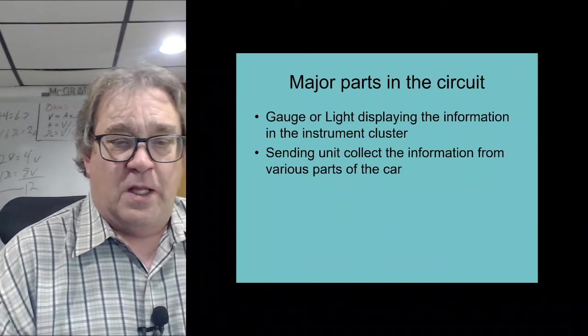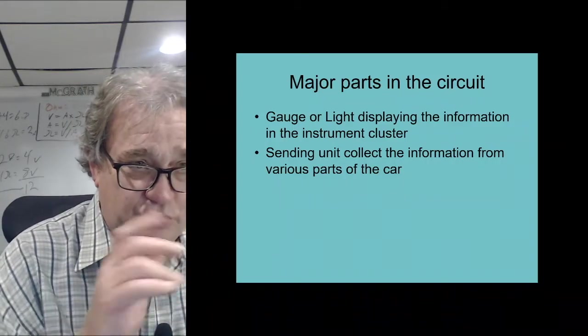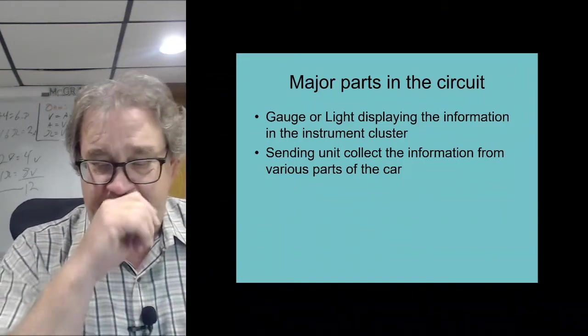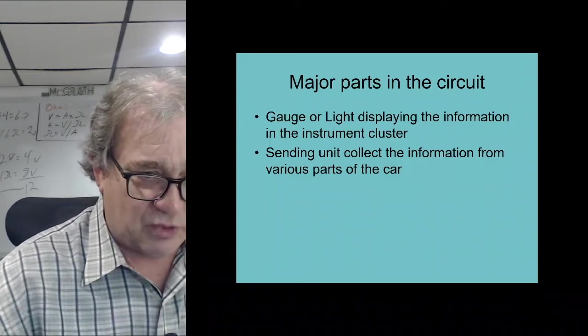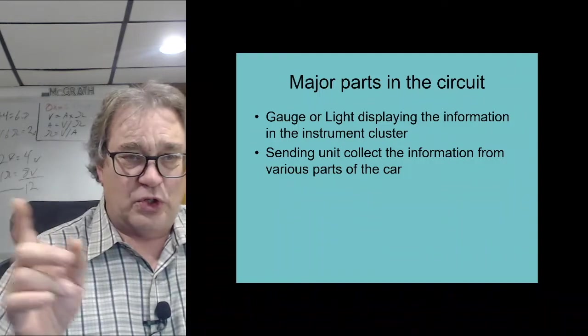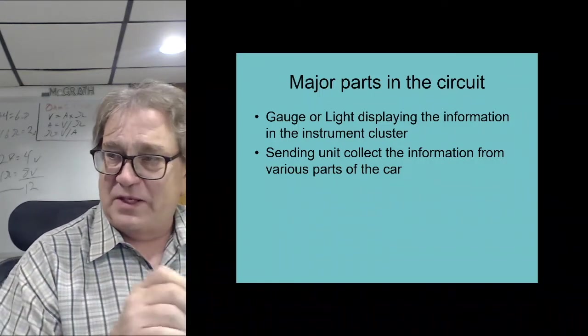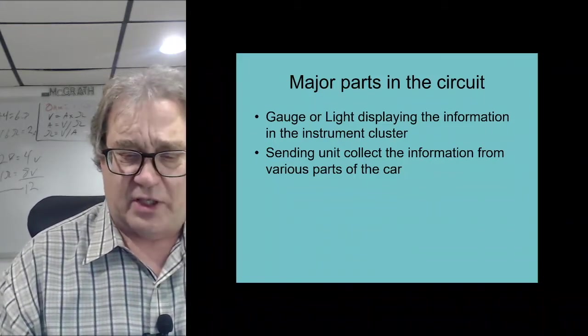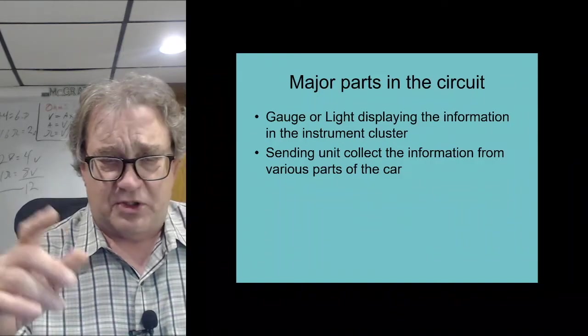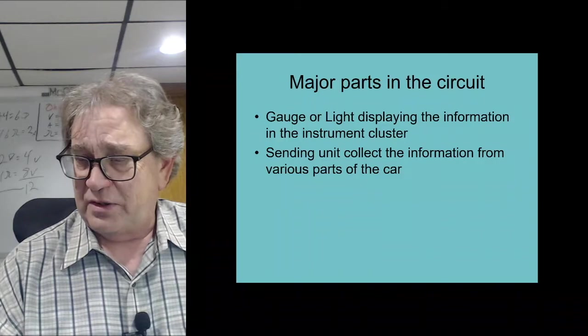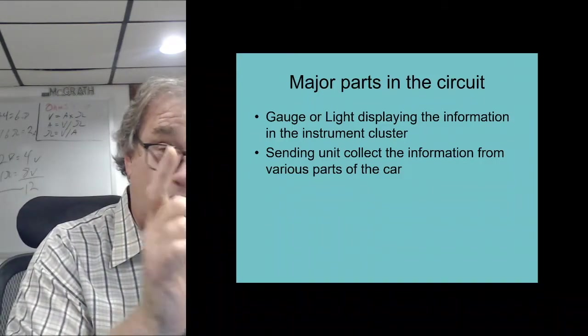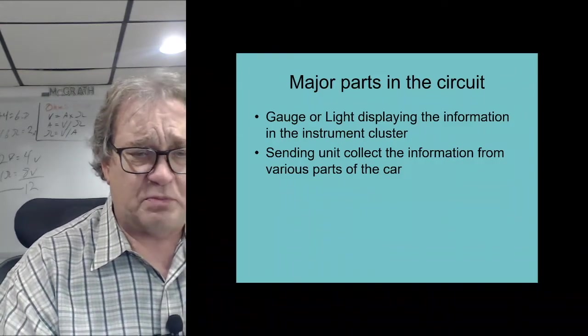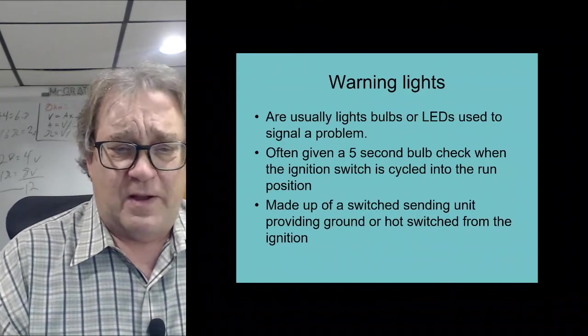We've got gauges - swinging needles or light bar displays - and then we usually have some type of sending unit. Now a lot of times these sending units are shared across a network, so the fuel gauge will go to the instrument cluster and then it'll go to the PCM because the powertrain needs to know how much fuel we have for evap testing. Or it may go to a BCM and then the BCM may divide it up to the ECM, PCM, and IPC, the instrument panel. They've become a little more complicated and computer driven, but still they're the same thing.